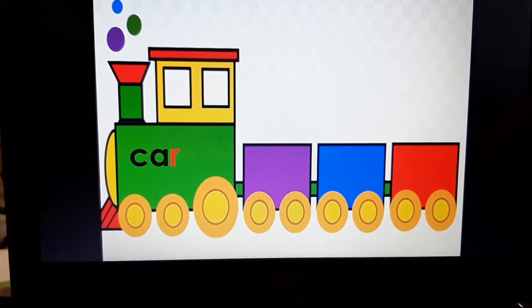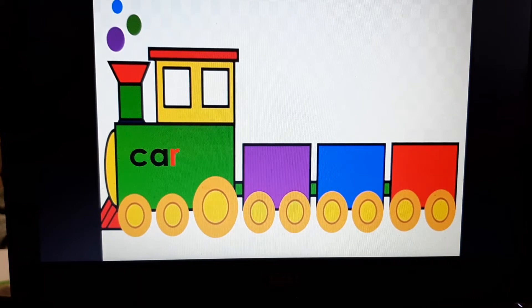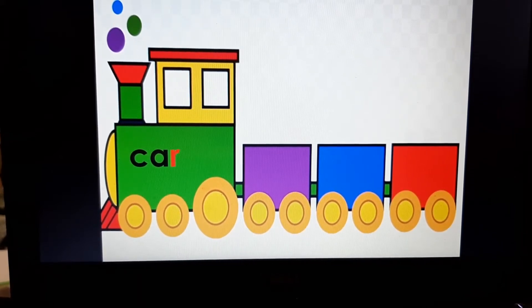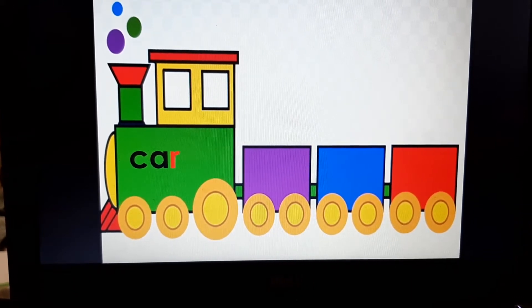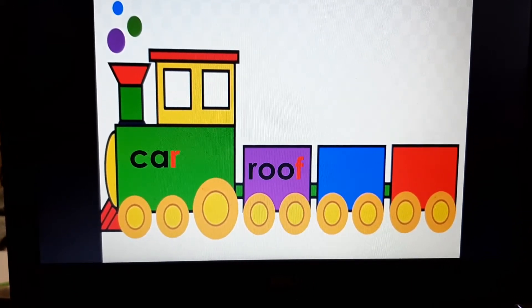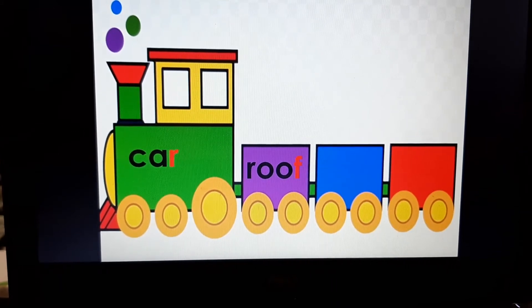So, the last letter is R. Think of some words which begin with letter R. Like rose, roof, rat, ring, and so many. You can write any word of your choice. See, I have written roof.